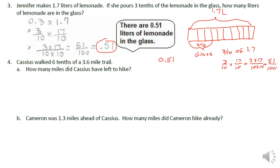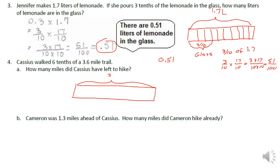Problem 4: Cassius walked 6 tenths of a 3.6-mile trail. How many miles did he have left to hike? Let's do a tape diagram. The total is 3.6 miles, and he walked 6 tenths, so we divide the diagram into tenths.